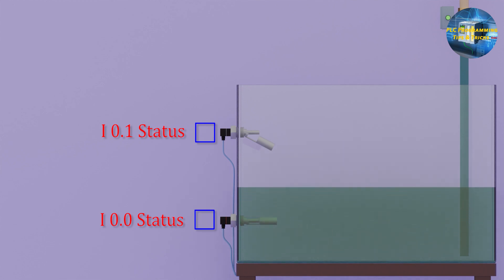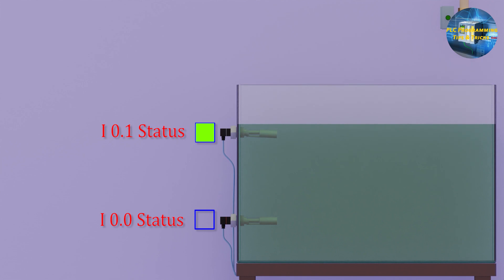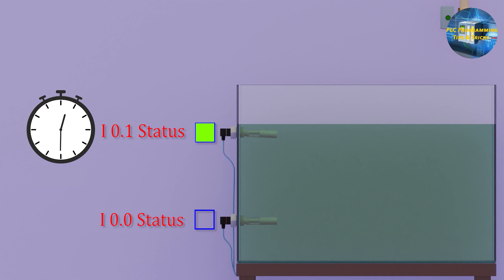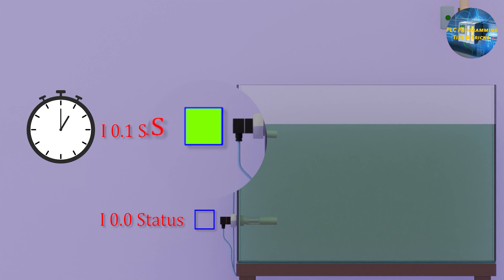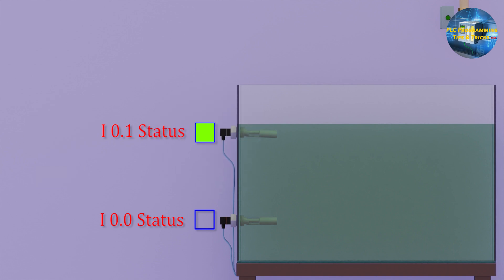These up and down movements of the probe send many pulse signals to the PLC input. To filter the signal and get a stable input signal from the probe, we use a timer after the sensor signal, so that if the water probe signal is continuously on for 500 milliseconds, only then will we consider this stable signal as true. We already made this logic in the sensor block in the last video tutorial.